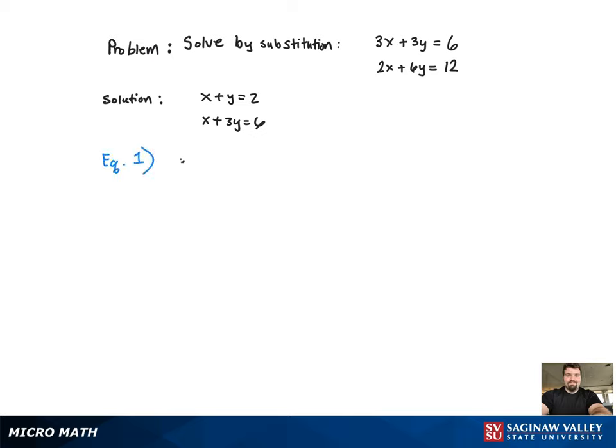Now I'm just going to take equation 1 and solve for one of the variables. I get x equal to 2 minus y. Now I'm going to plug that in to the second equation.